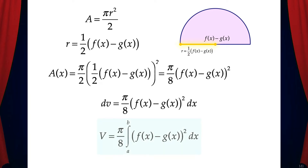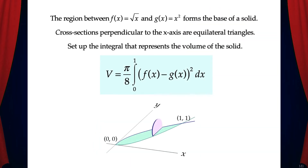That means the volume of a solid with semicircle cross-sections is pi over 8 times the integral from a to b of the quantity of f of x minus g of x squared dx. So now we can write the integral that represents the volume of the solid of our original problem, and that's pi over 8 times the integral from 0 to 1 of the quantity of f of x minus g of x squared dx.